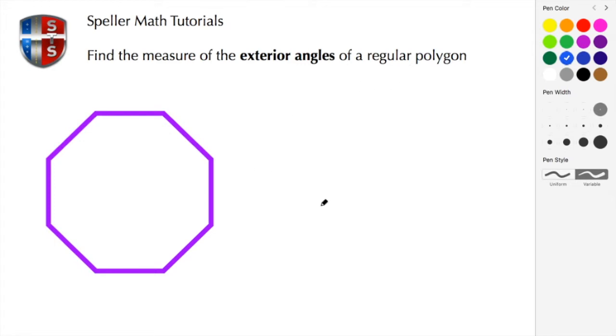In this particular example we're working with an octagon. Just to do a quick recap, we know that if a polygon is regular that means that each of these sides are congruent and we also know that each one of these interior angles are also congruent. Here we're tasked to find the measure of the exterior angle.